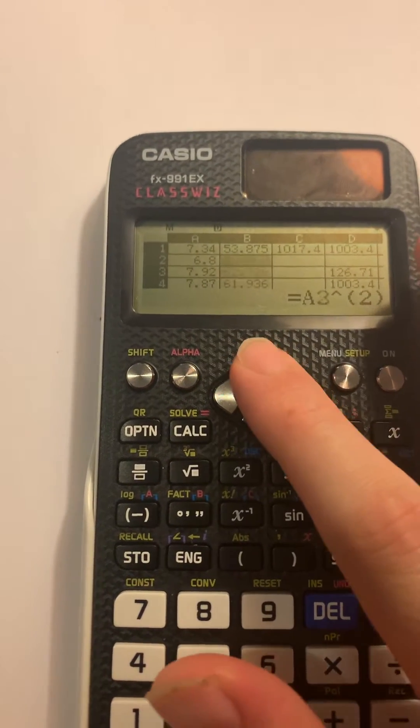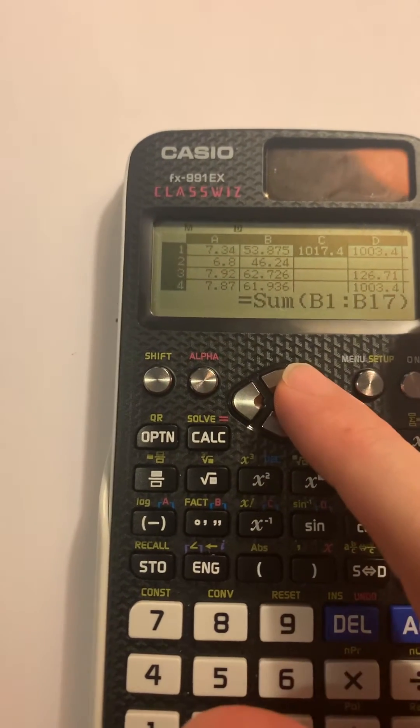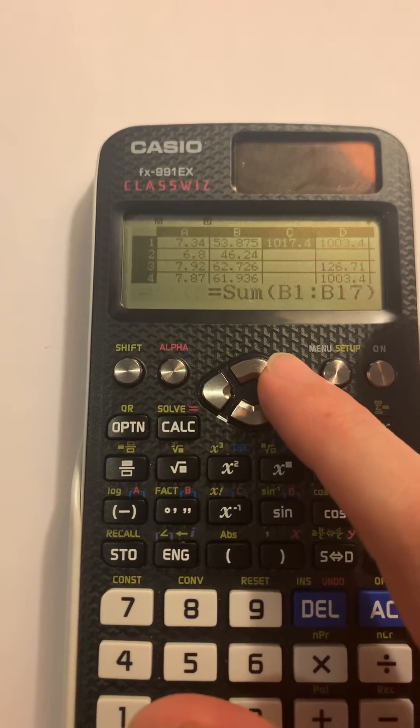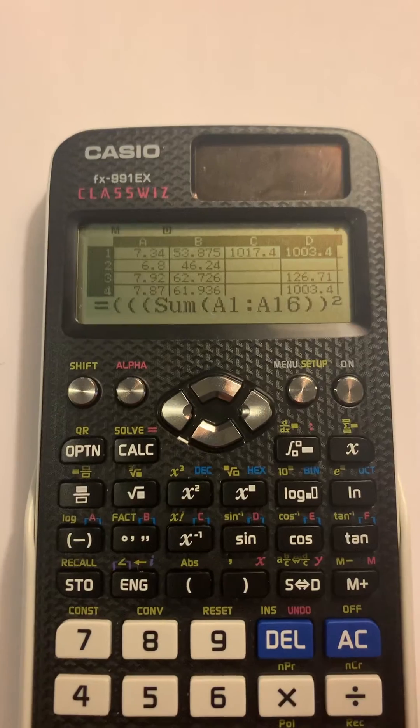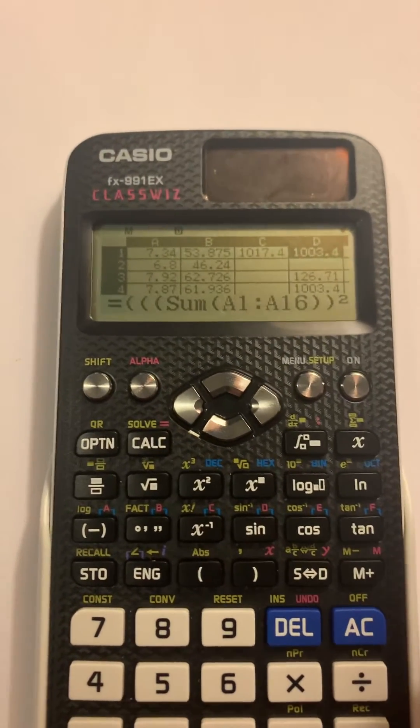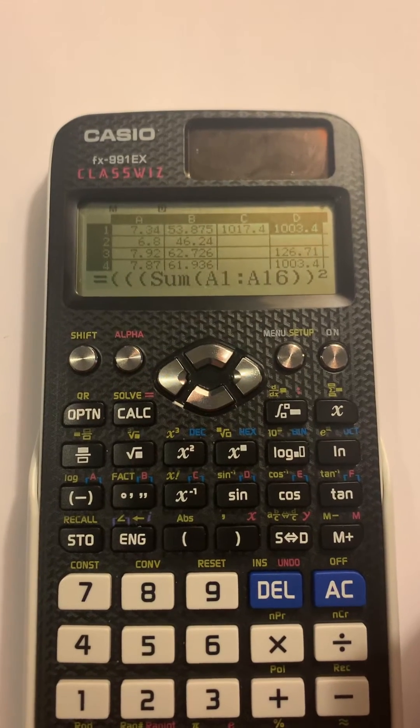And so then after that, I took the sum of those to get the sum of squares. And if you want to get the square sums, you can also just go ahead and sum the whole first row, square it, and divide it by your n value. And then you can use this for your ANOVA tables.